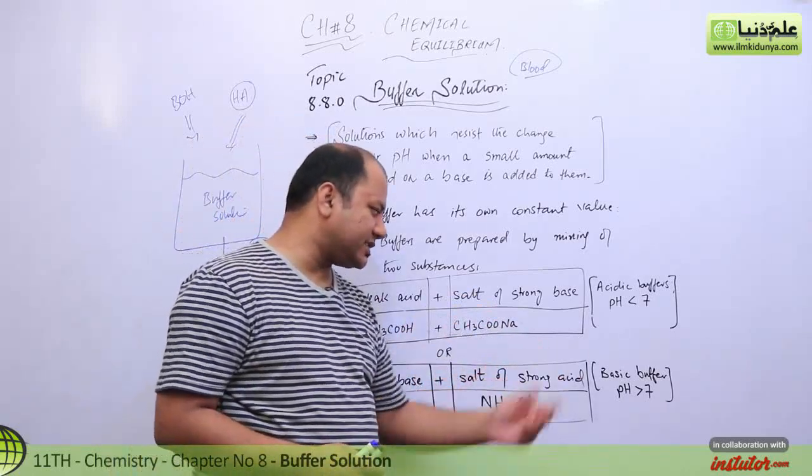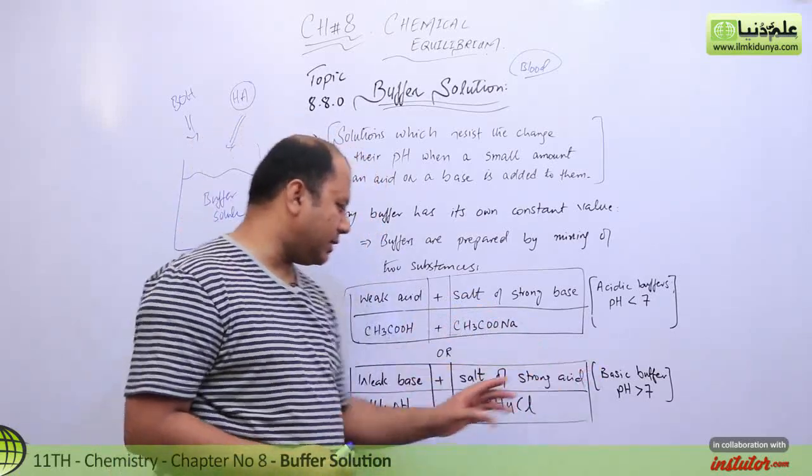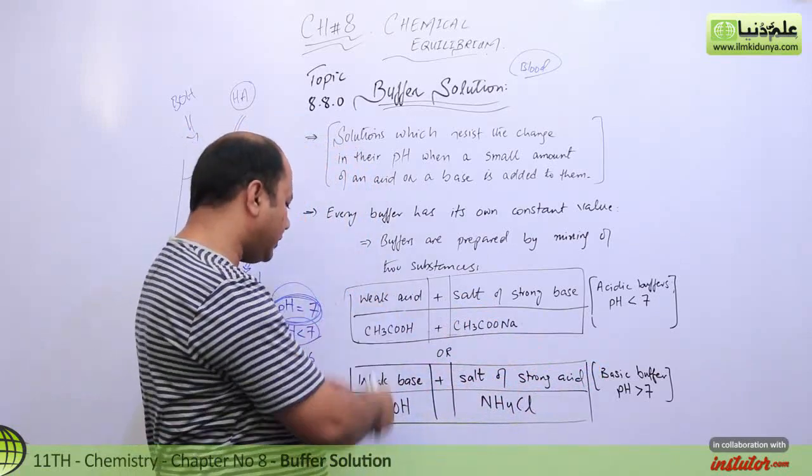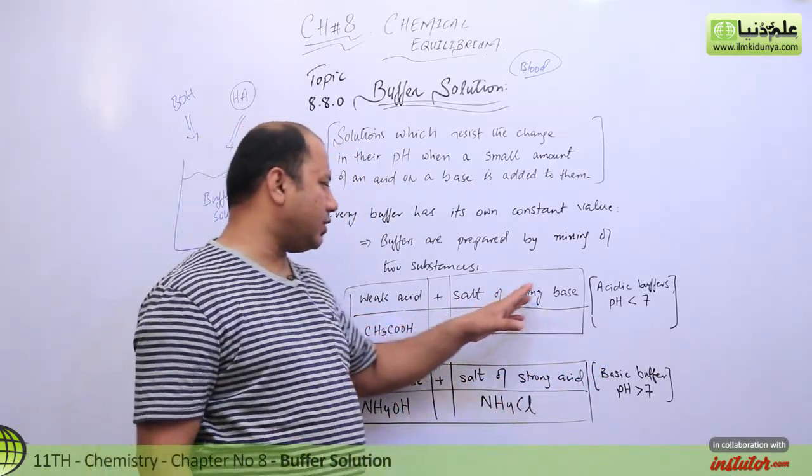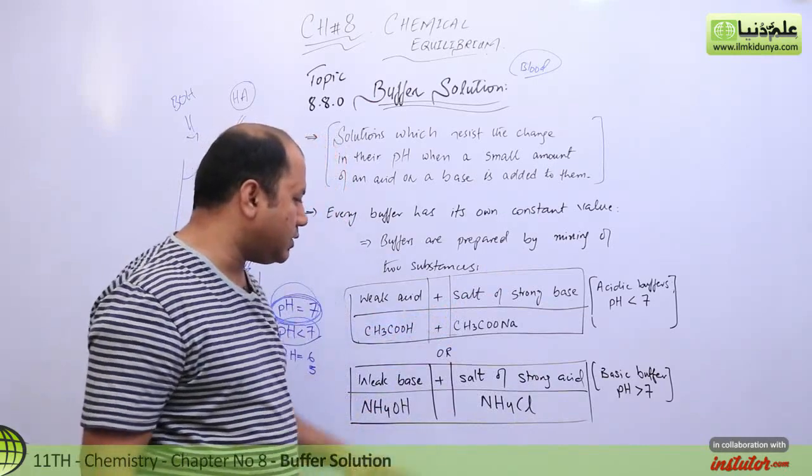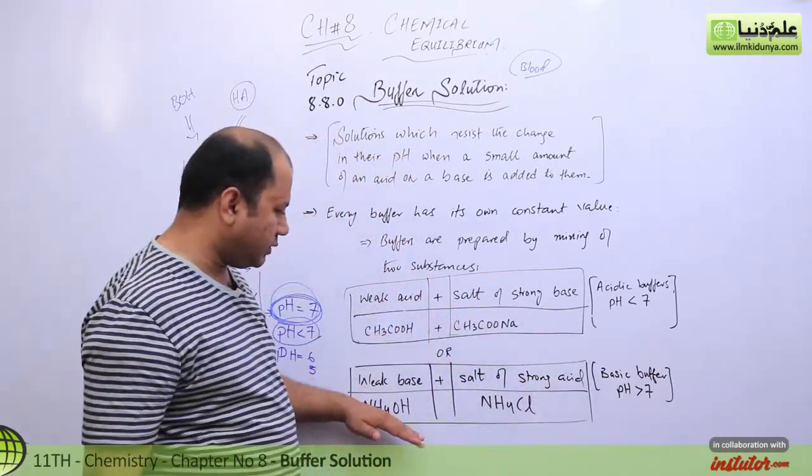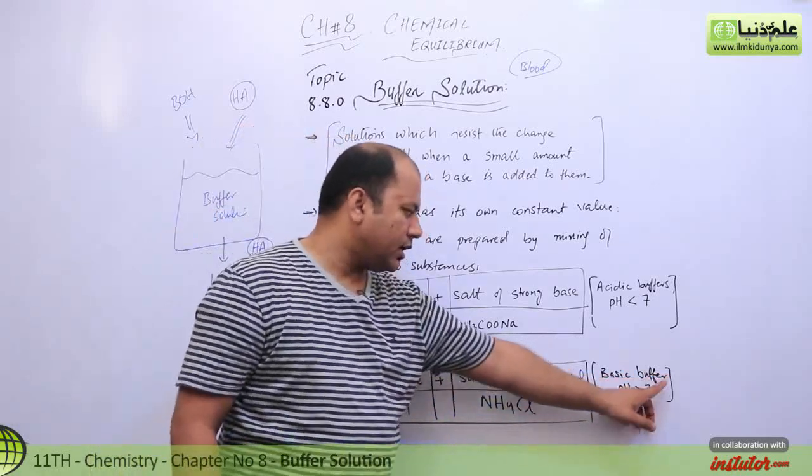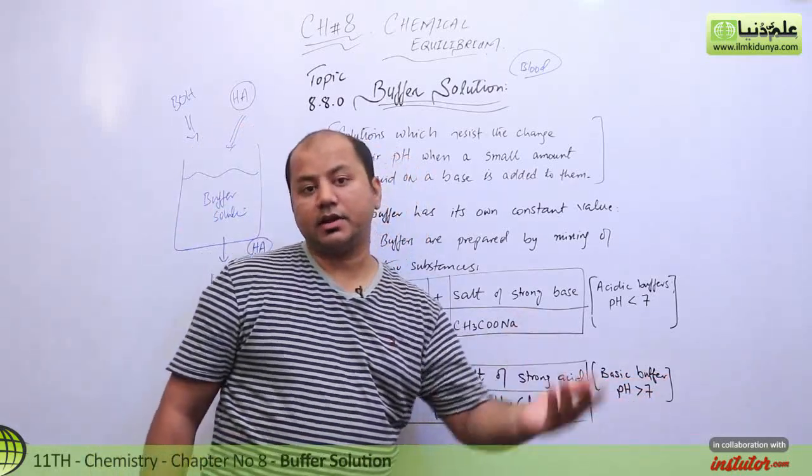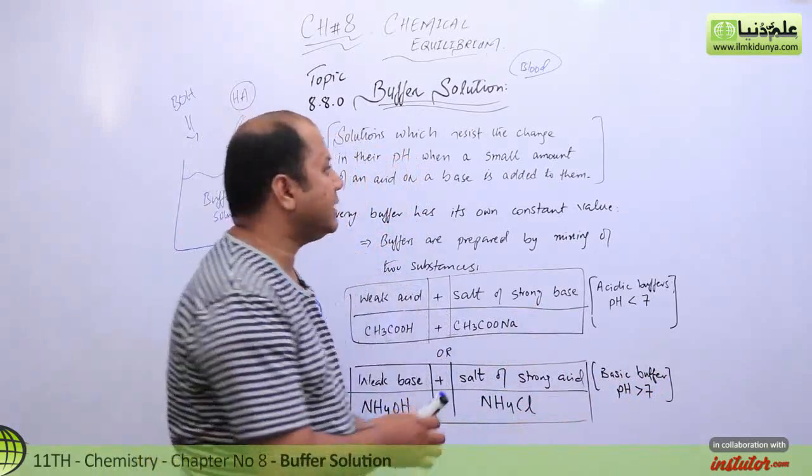Iske alawa agar for example agli baat karein - weak base hai aur salt of a strong acid. Agar hum use karein toh is tarah ke - matlab yahan par aapne kya kiya? Weak acid use kiya. Yahan pe aap kya kar rahe ho? Weak base use kar rahe ho. Yahan pe aap salt of a strong base use kar rahe ho, yahan pe aap salt of a strong acid use kar rahe ho. Yaani bilkul ulta kar rahe ho. Aur isko basic buffer kahenge. Ab yeh pH kya sustain karega jo ki definitely greater than 7 hogi.